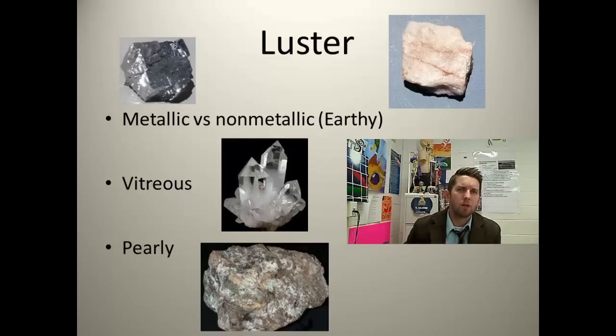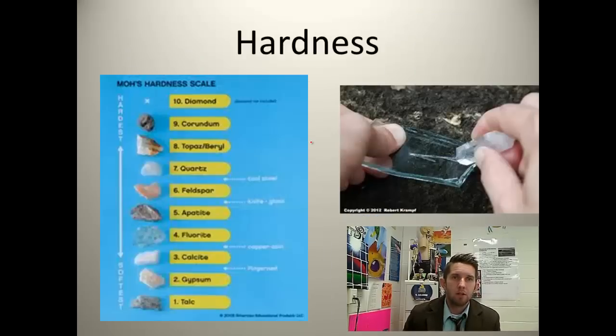Sometimes you'll hear it described as pearly. You can picture what a pearl looks like or perhaps the inside of a clam or an oyster looks like, this kind of shiny, iridescent color. That's all just a description of how shiny or how it reflects light. That's its luster.